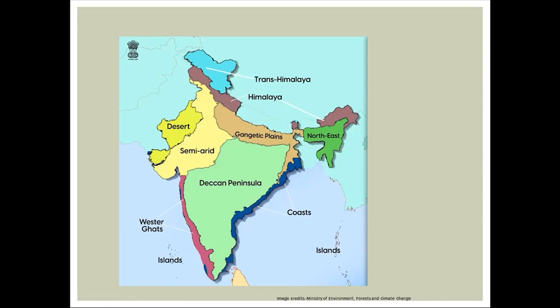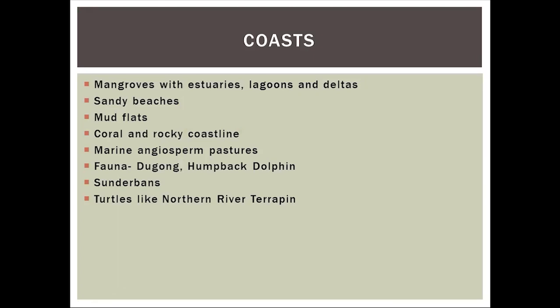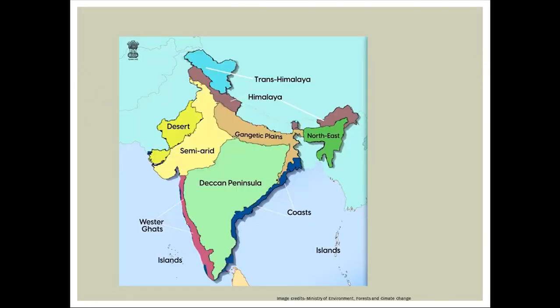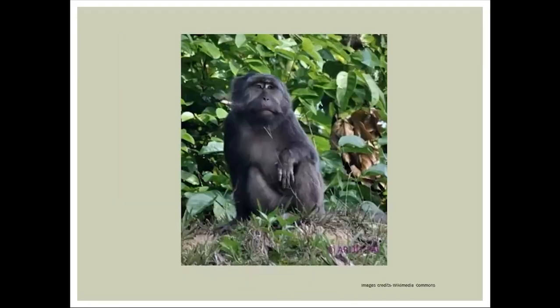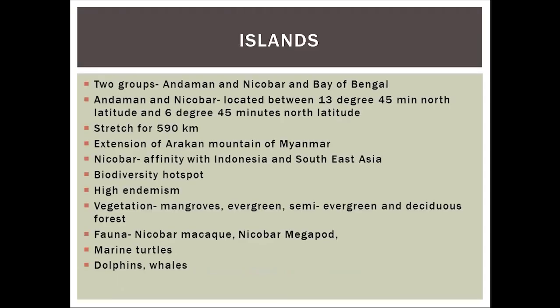Since mangroves are present here, they are habitat for a particular bird community including herons, egrets, seagulls, and sandpipers — these birds can be found in the mangroves of the coast.